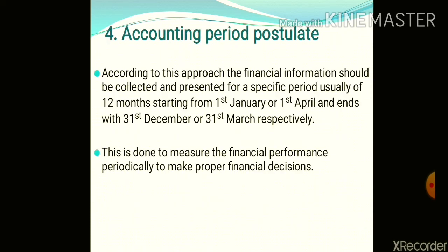The last and final postulate is the Accounting Period Postulate. Business is established for a long period of time, so the total life of business is divided into different periods. Basically, a twelve-month period is called the accounting period. It may start from 1st January and end with 31st December, or it can start from 1st April and end with 31st March. According to this postulate, business transactions and financial information are collected and presented to users for a period of one year or 12 months.